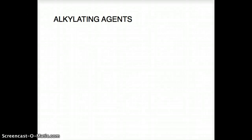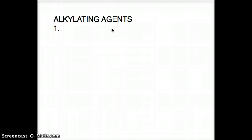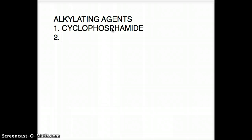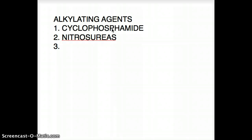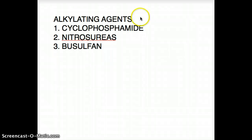Hello, welcome back. This tutorial is about alkylating agents, which are used as anti-cancer drugs. I'm going to be talking about three alkylating agents: number one is cyclophosphamide, number two is nitrous ureas, and number three is busulfan.